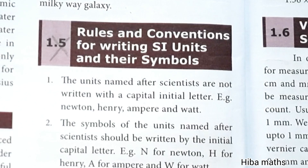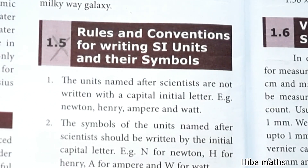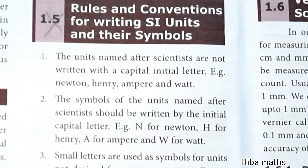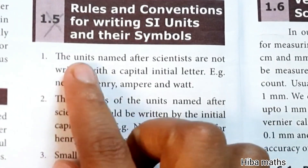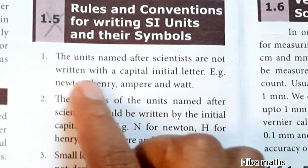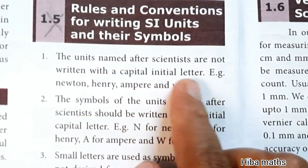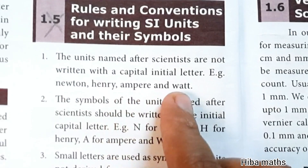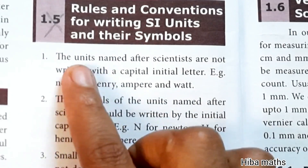First point: the units named after scientists are not written with a capital initial letter. Example: newton, henry, ampere, and watt. The unit names themselves are not written with a capital letter.